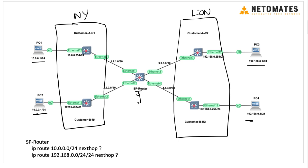If we want to write routing for the customer networks on the service provider router, suppose a packet comes to the service provider with an address in the 10 range — where should we send this traffic and what do we add as a next hop? Customer A has one 10 network and Customer B has another. For example, if Customer A's PC3 is sending traffic to PC1 in the New York location, how do we differentiate and segregate traffic between different customers?